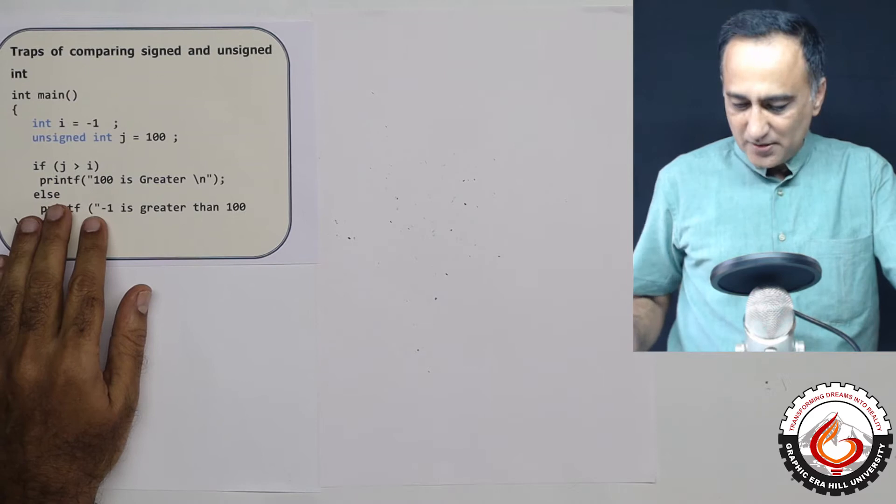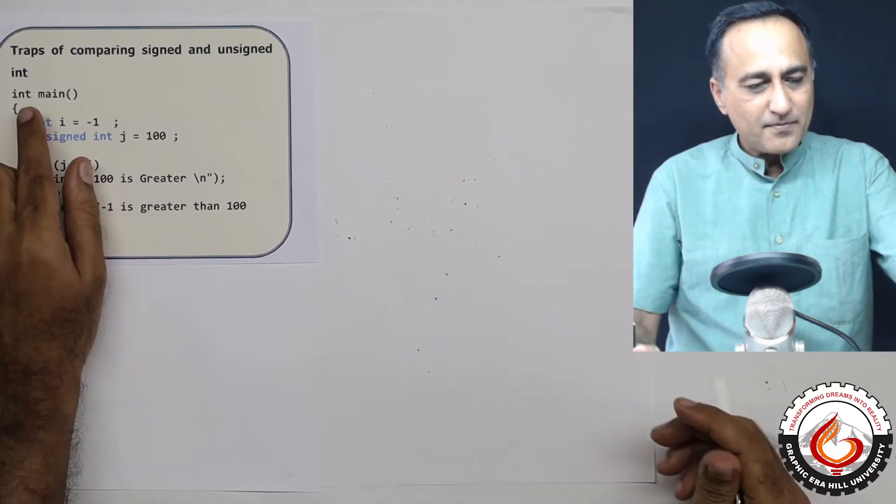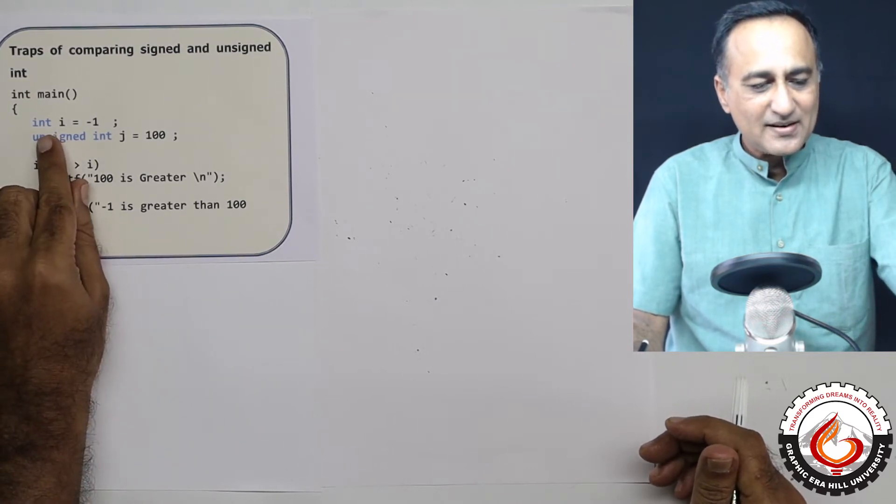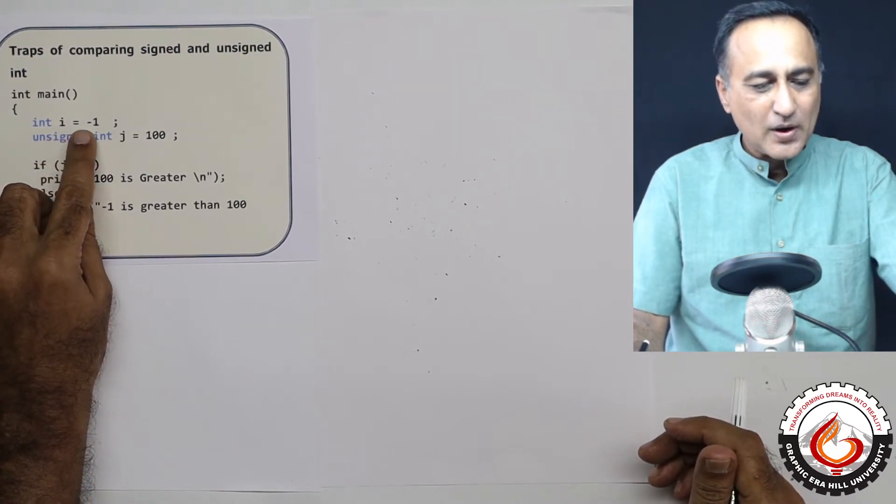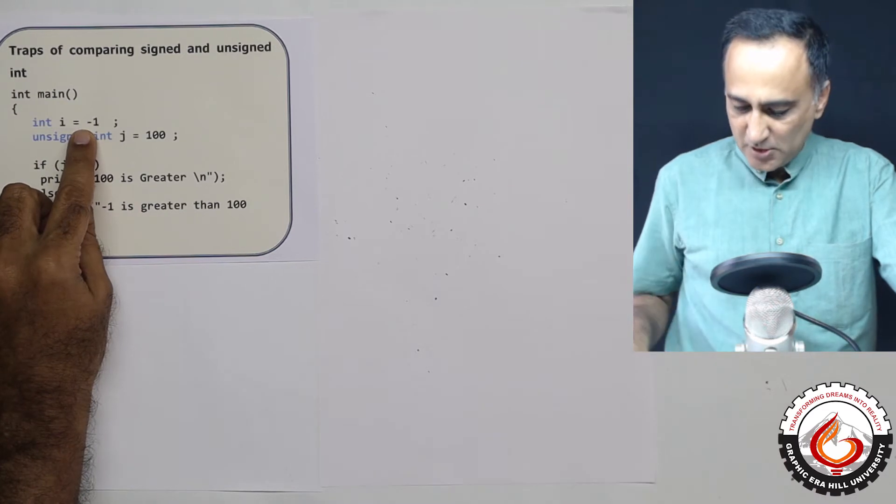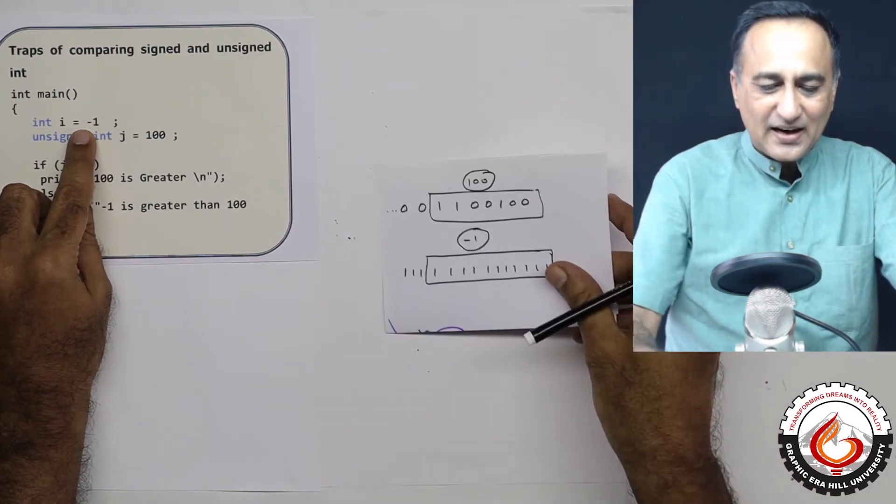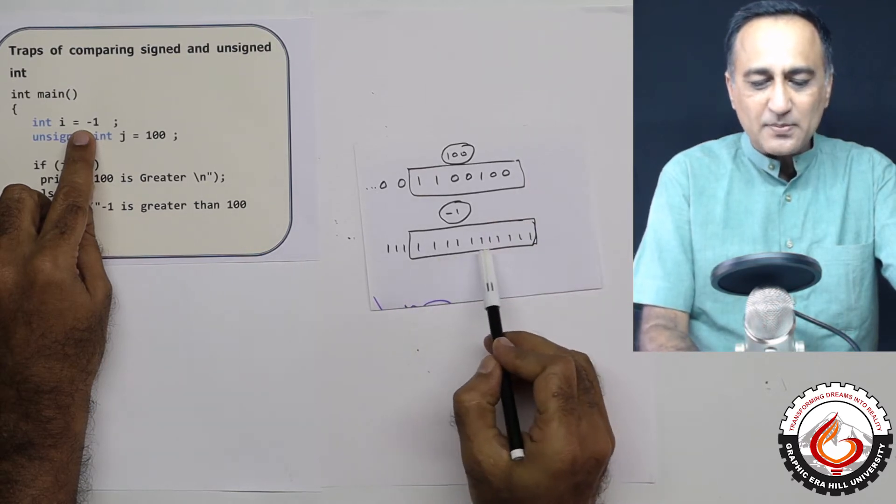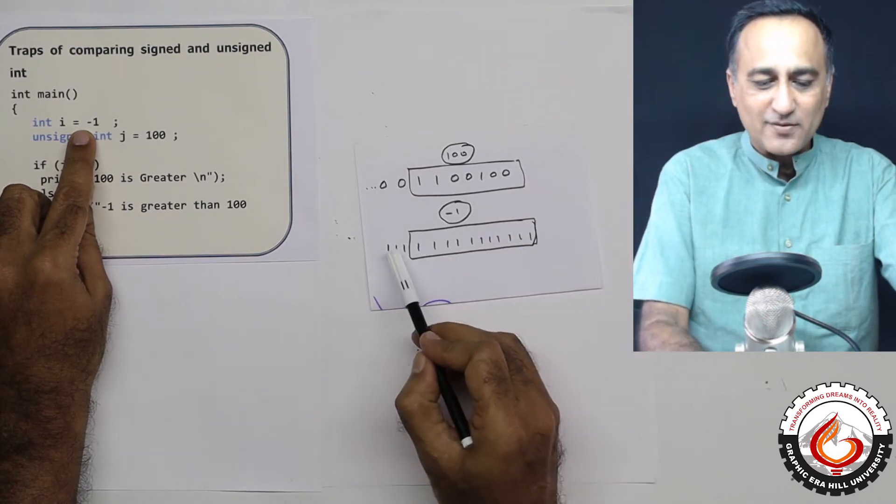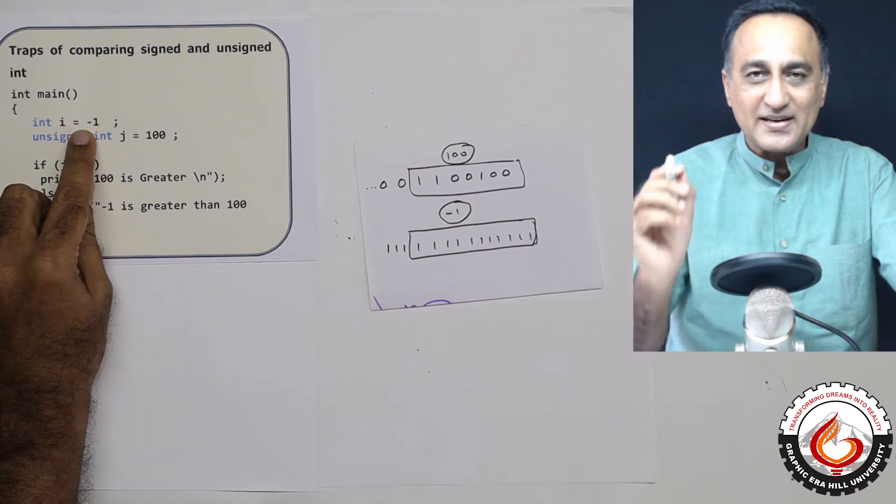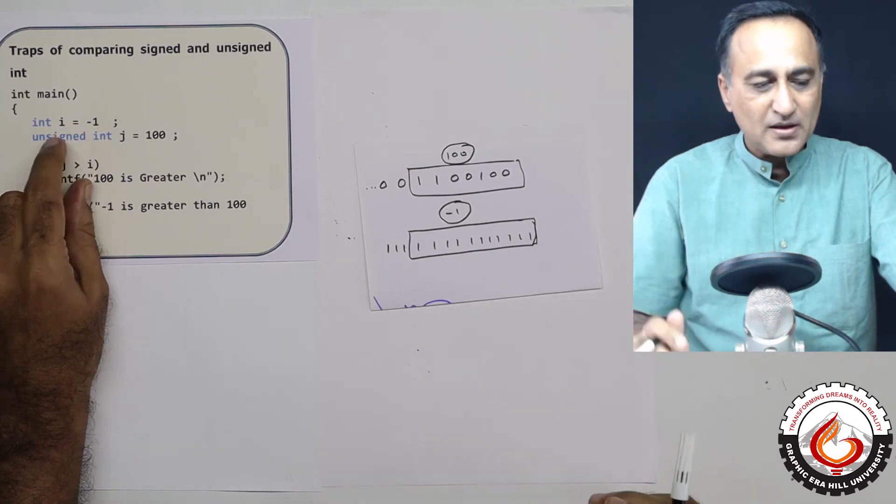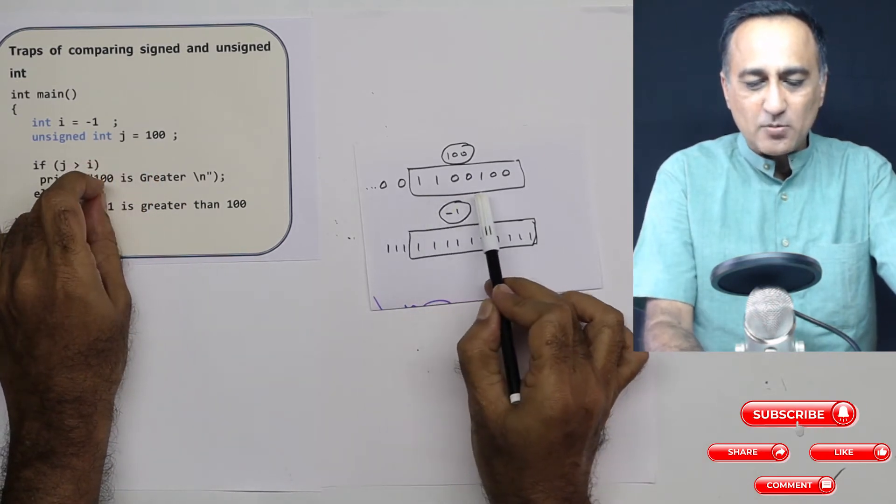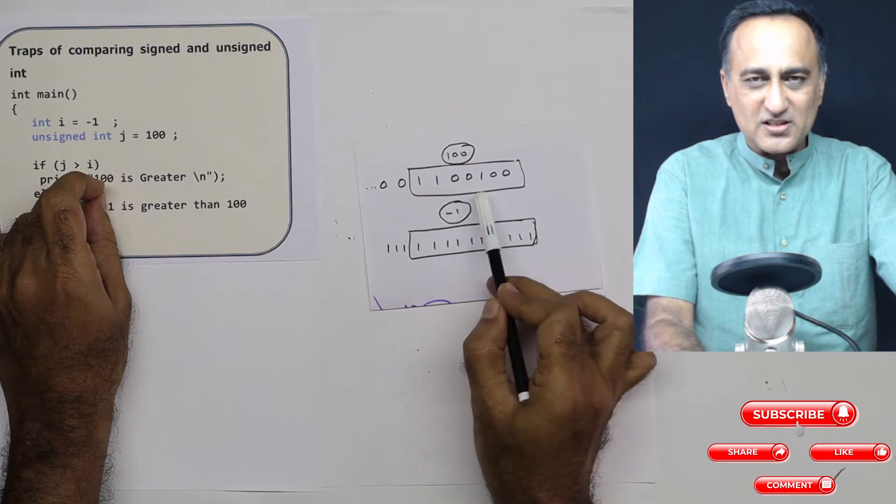So what I'm doing here is I have created a small sample code snippet. In that I have declared a signed int i whose value is -1. So when I declare a signed int i as -1 in 2's complement, -1 is going to be simply represented as a number of 1's with the leftmost digit being 1 indicating it's a negative number. Now unsigned int j is 100. So 100 is going to be represented like a normal positive number.